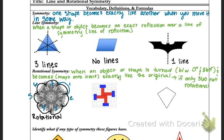To determine the rotational symmetry, you want to take 360 divided by your number of turns. So 360 divided by seven is 51.4 degrees.